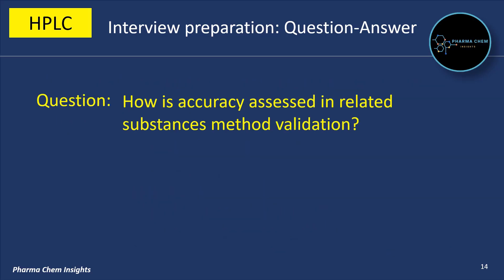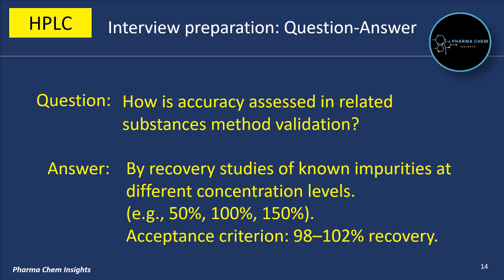Next question: how is accuracy assessed in related substance method validation? By recovery studies of known impurities at different concentration levels, for example 50%, 100%, and 150%. The acceptance criteria is 98% to 102% recovery.